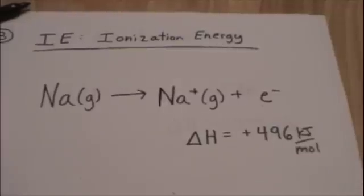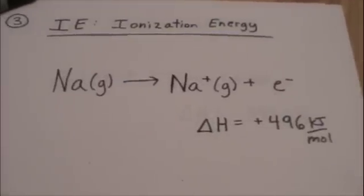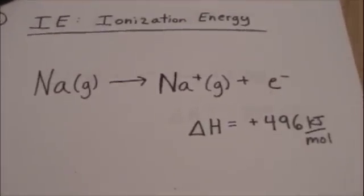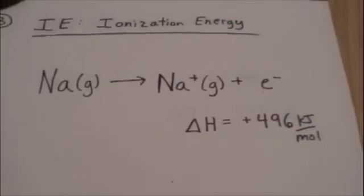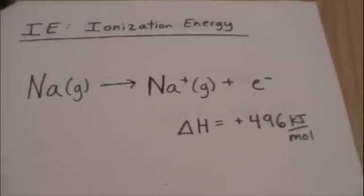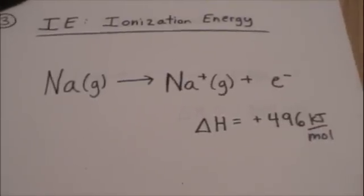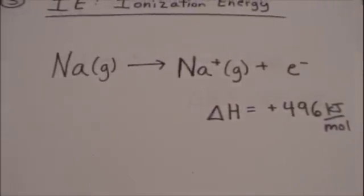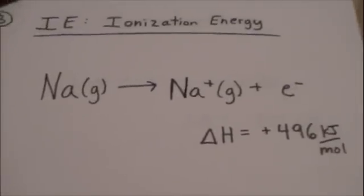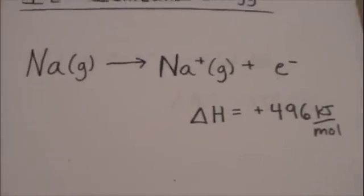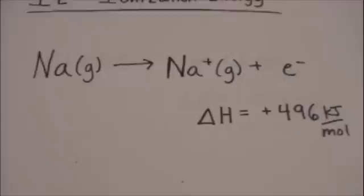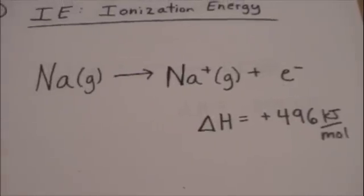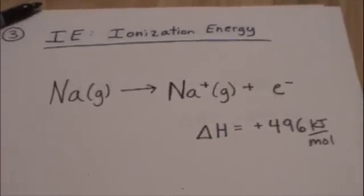Sodium, it's willing to give up that electron because, remember, it's going to then become isoelectronic to one of the noble gases. And that's stable. So that's a pretty low ionization energy. Remember that ionization energies increase as you go up and over on the periodic table. So even a larger alkali metal would have even a lower ionization energy. So again, review your notes over that. You should have already had this.